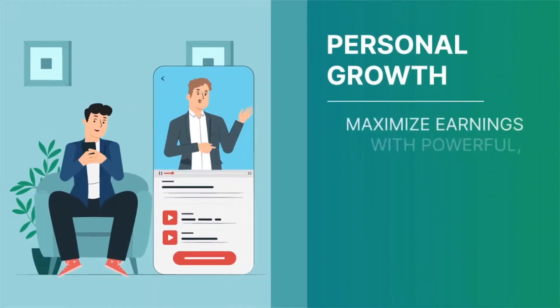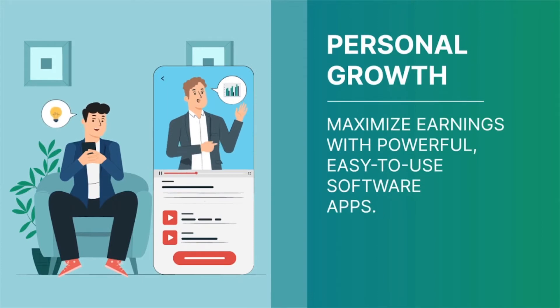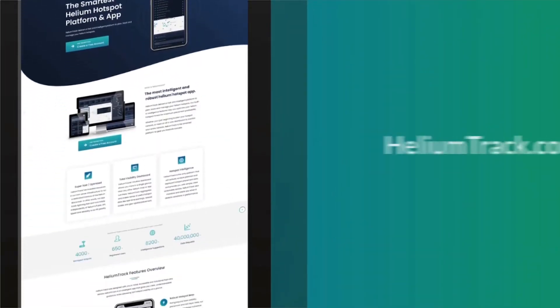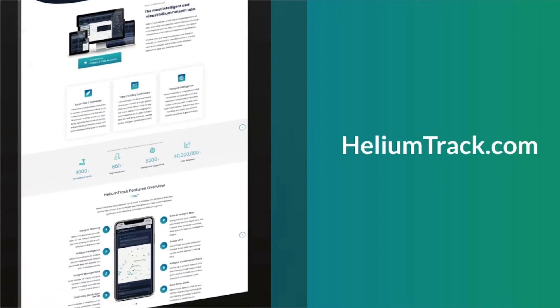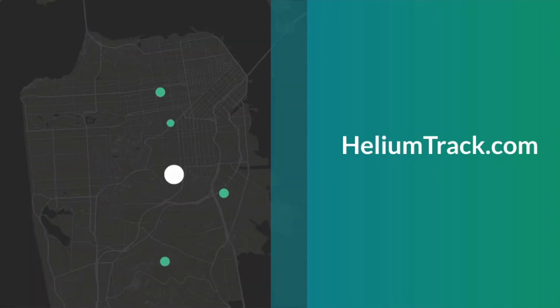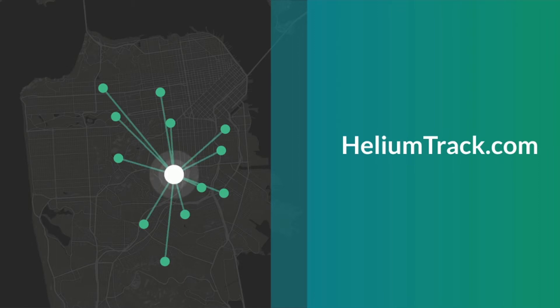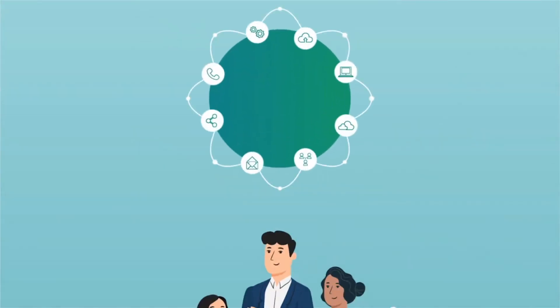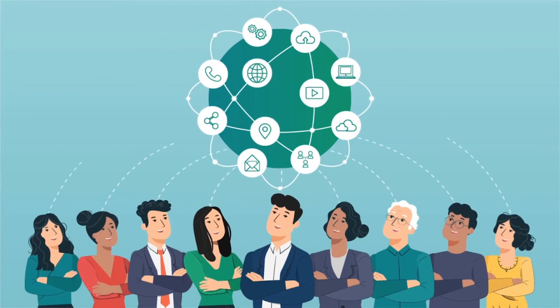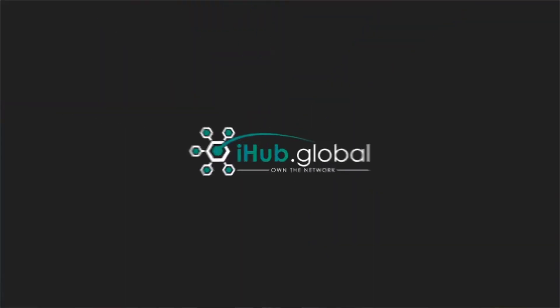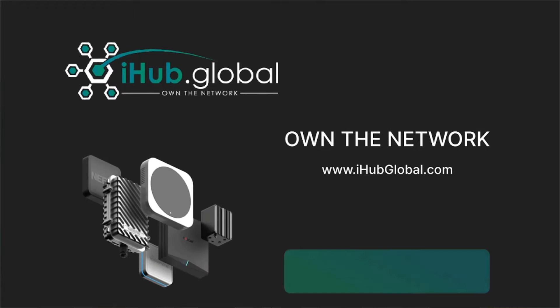We'll also show you simple earning strategies to grow. By using our proprietary app called Helium Track, you can track your hotspots and run virtual simulations to place free hotspots in the best locations to further expand your network of affiliates and earnings. Who knew owning this network could be so easy? So if you're ready, let's grow together with iHub Global.